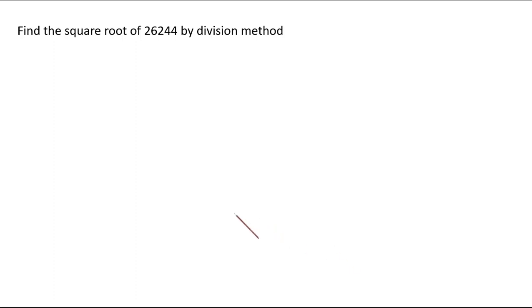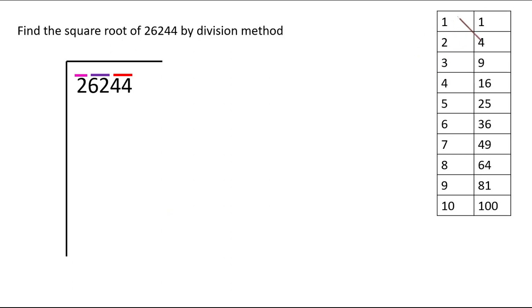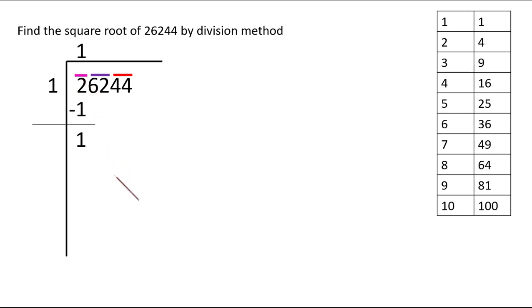Let us look at another example. What is the square root of 26244? We make the arrangement and write 26244. Making the groups from the units place: 44 is the first group, 62 is the second, and 2 is left alone. From the square table, 1×1 = 1 is the right choice here because 2×2 = 4 would be bigger than 2. So 1×1 = 1; subtracting from 2 gives a remainder of 1.